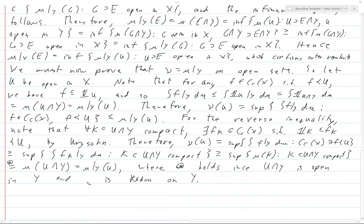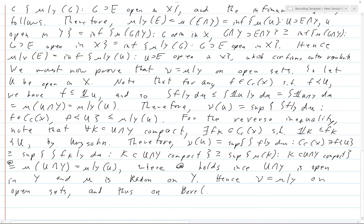Hence ν equals μ|_Y because we've proved the inequality in both directions. This holds on open sets, and thus on Borel sets. If two measures are equal on all Borel sets the measures are equal, but more importantly that's exactly the condition stated in the problem. So once we've done this, we've completed the proof.